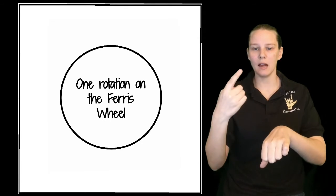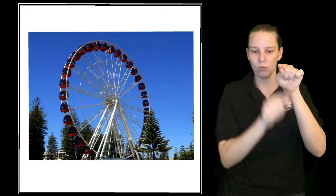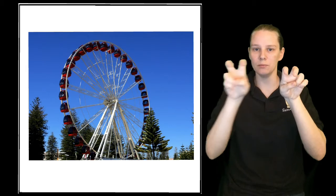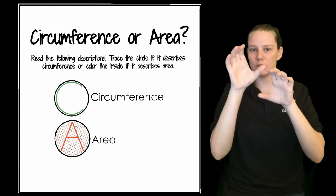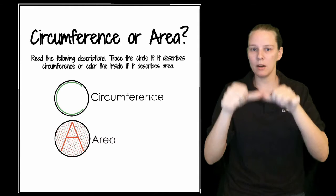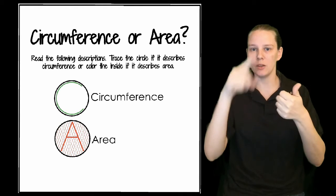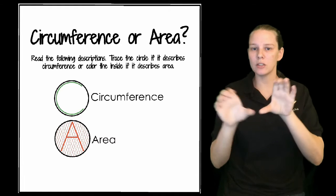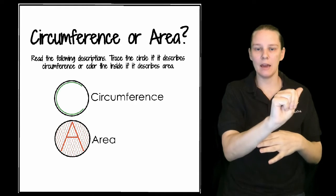So, one time going around on the Ferris wheel. Do you think that is circumference or area? You decide. Move the green C or the red A.